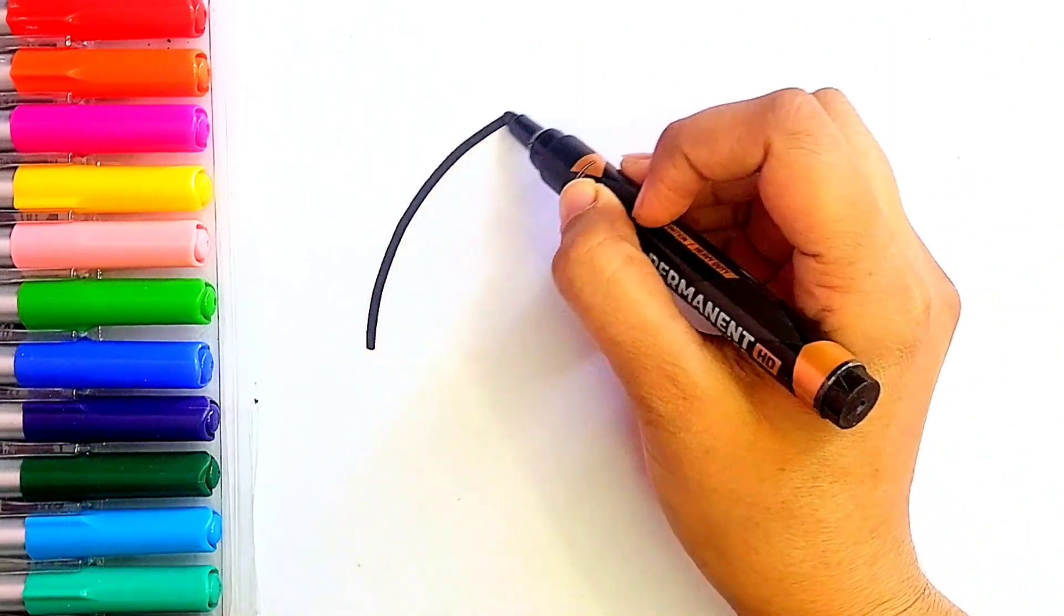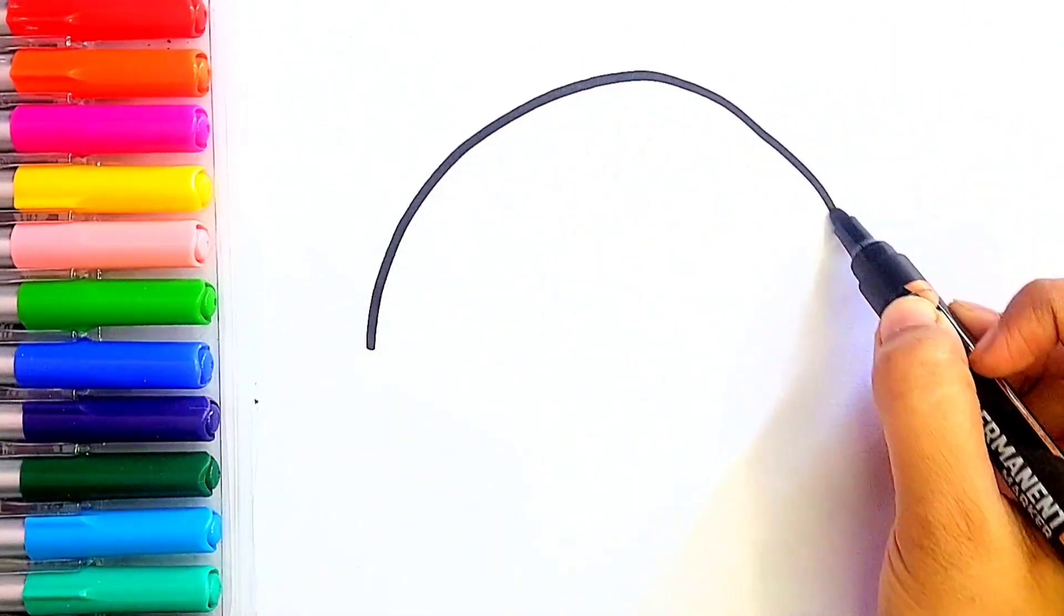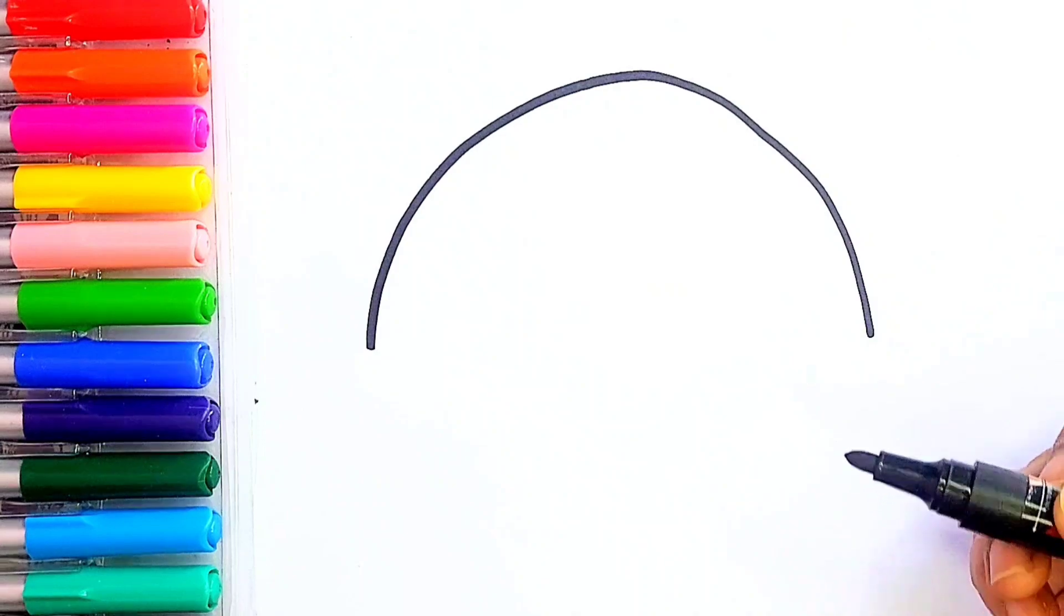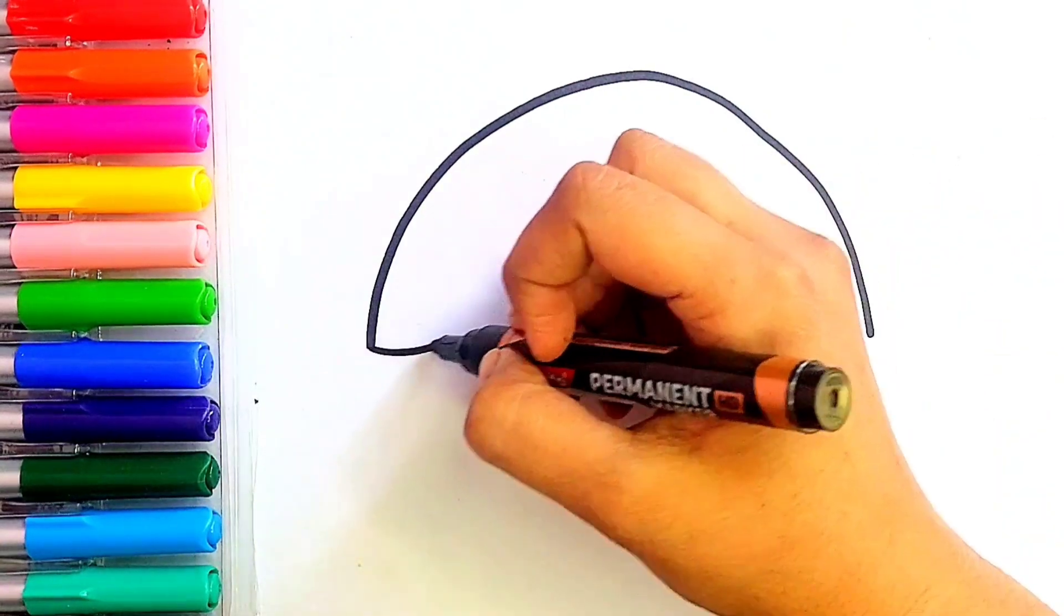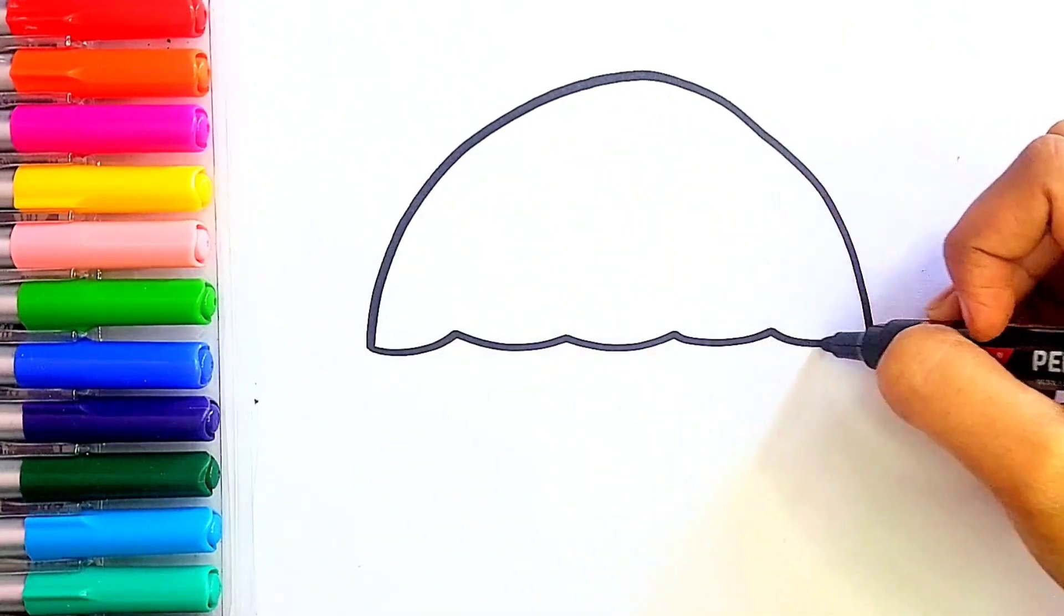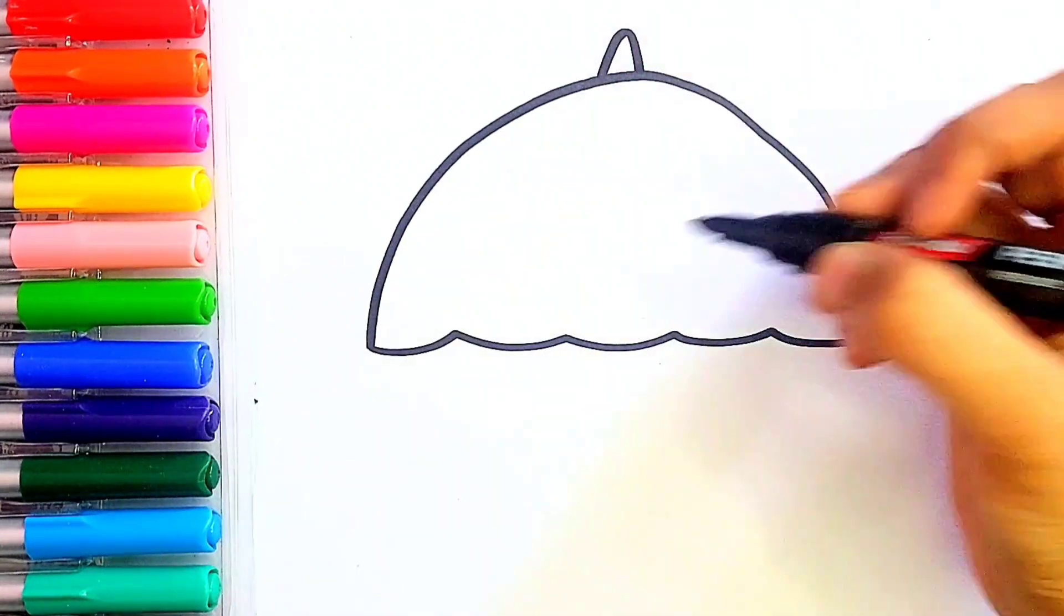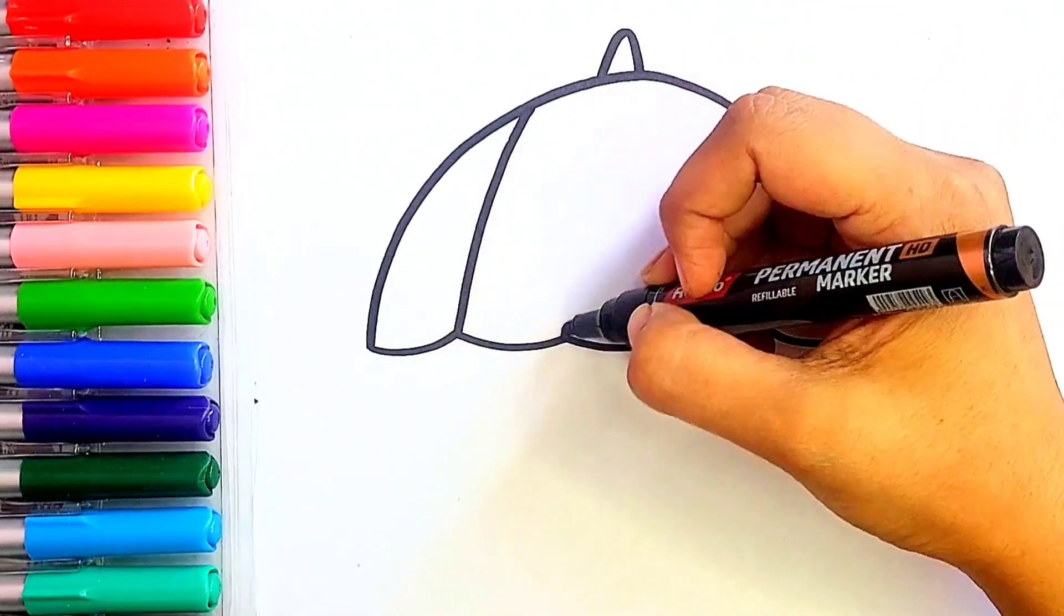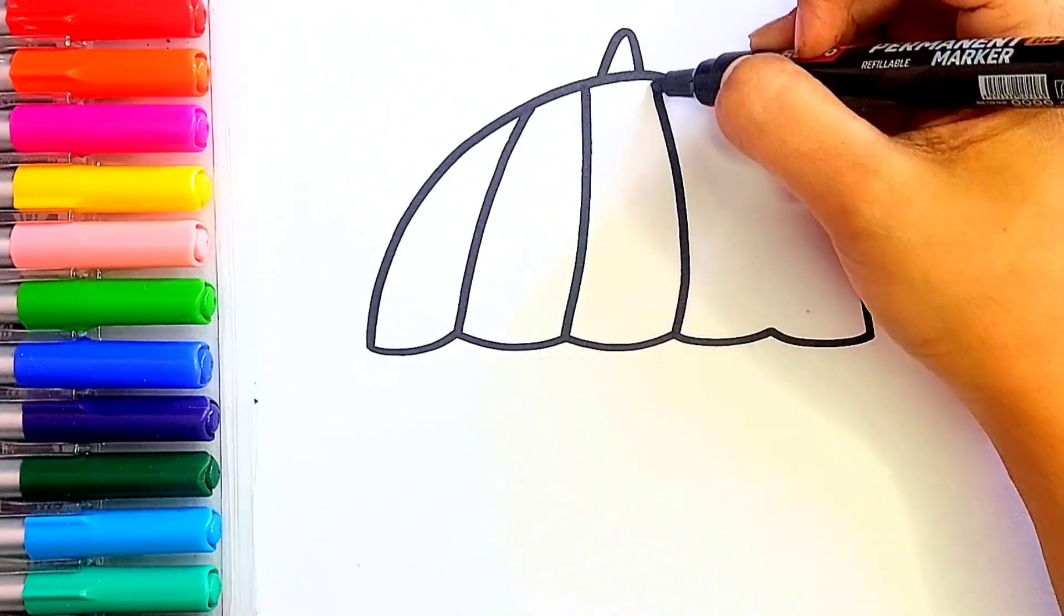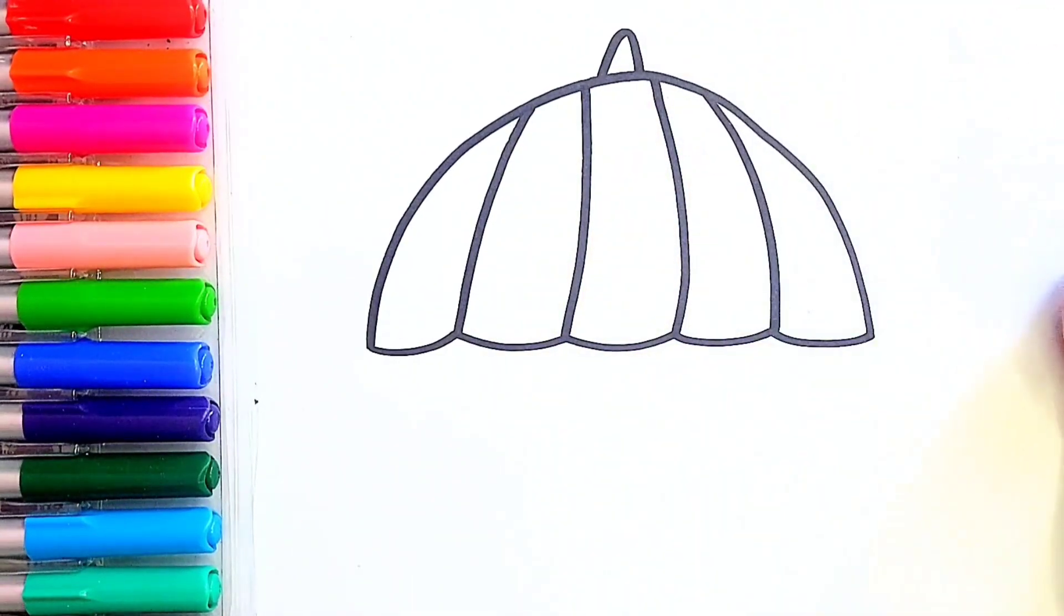First I am going to draw our umbrella's basic structure. I am drawing one semicircle. Now I am drawing some curves. Now I am going to draw some lines like this. Great!